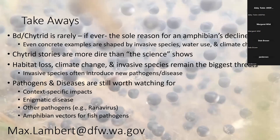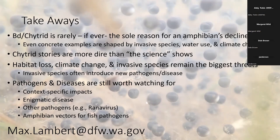To wrap up: BD or chytrid is rarely ever the sole reason for amphibian decline. Even concrete examples have impacts influenced by invasive species, climate change, and land use practices. The stories in popular media are a lot more severe than what the science actually shows us. Habitat loss and climate change really are the biggest threats we're dealing with in amphibian conservation here in Washington and across the world. That said, pathogens and diseases for amphibians are very much worth watching — we have enigmatic declines we can't quite figure out, context-specific impacts, other pathogens like ranavirus that get less attention, and invasive amphibians that can be vectors for fish pathogens as well.